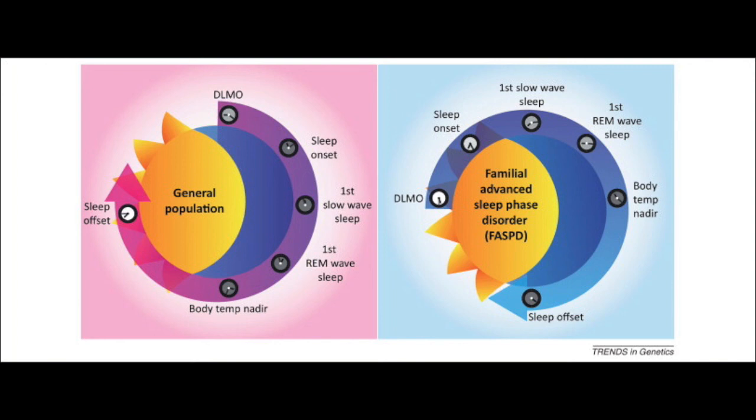However, because of the altered site, the mutant HPER2 protein is less susceptible to degradation. This causes it to accumulate more rapidly in the cytoplasm. Once they have entered the nucleus, HPER2 proteins turn off HPER2 gene transcription. This process leads to a shortened sleep cycle, which can be seen on the right.